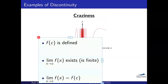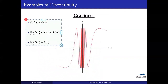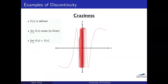For the craziness discontinuity, none of the conditions work. I can't even tell you what f(c) is — let's say c equals zero — the function is not defined there. The limit: you just can't tell with this function. It doesn't exist, there's no way to figure that out. The first two conditions already failed, so the third condition isn't going to work either. Those are the examples of those discontinuities.